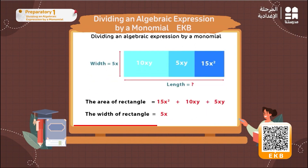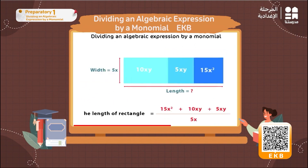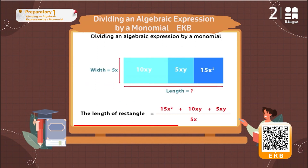Second, we need to know the width of this rectangle, which equals 5x. Third, to get the length of the rectangle, we will divide the area of the rectangle by its width.